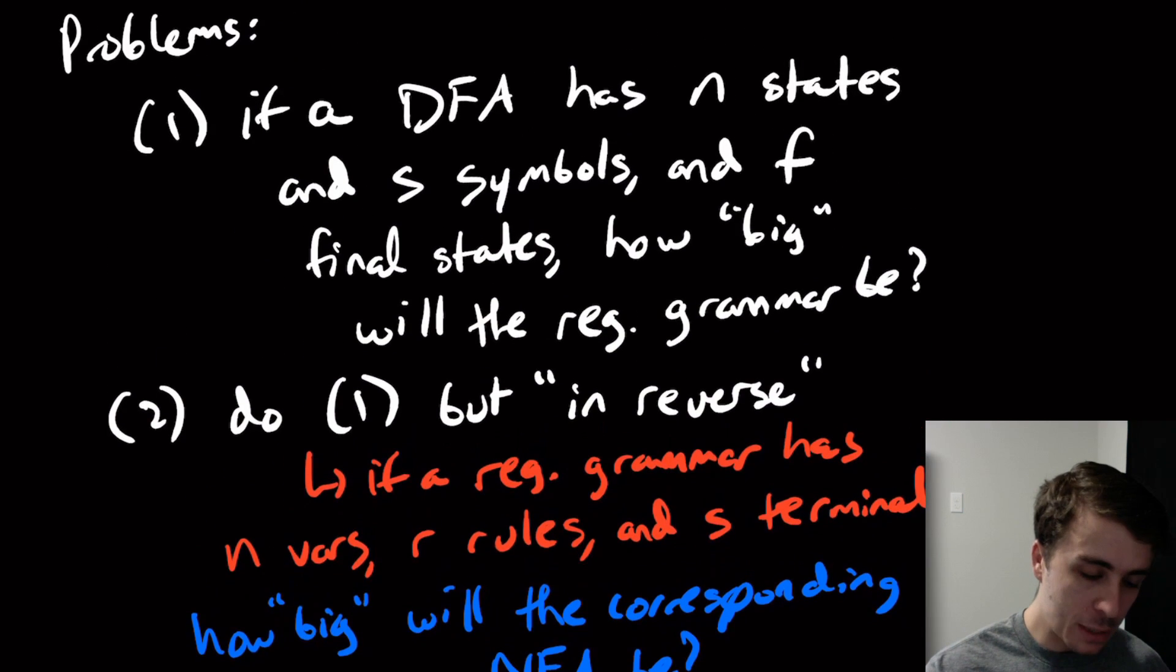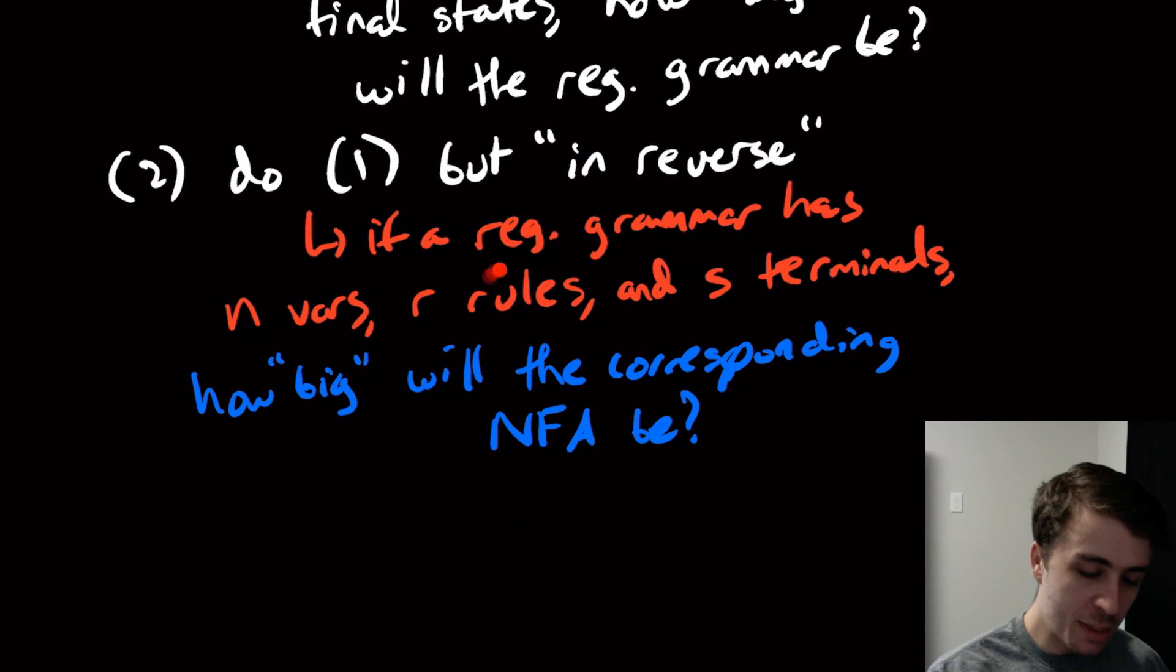Because if you recall from the construction, we can convert a DFA or an NFA directly to a regular grammar. But if we started with a regular grammar we can only necessarily get an NFA, we don't necessarily get a DFA.